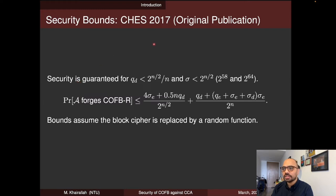In the original publication at CHES 2017, the authors claimed security as long as the number of forgery attempts or decryption queries is less than 2 to the n/2 over n, and the number of encrypted and decrypted blocks is less than 2 to the n/2. These numbers in practice are 2 to the 58 and 2 to the 64. The forgery bound is a birthday bound in terms of the encrypted and decrypted blocks, and also has a logarithmic term n related to the number of forgery attempts. All block cipher calls are replaced by a random function.